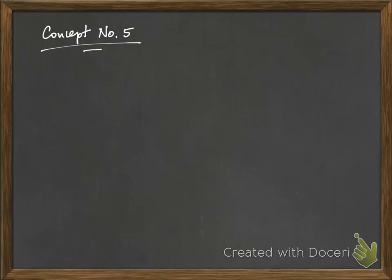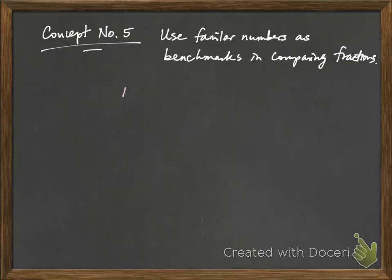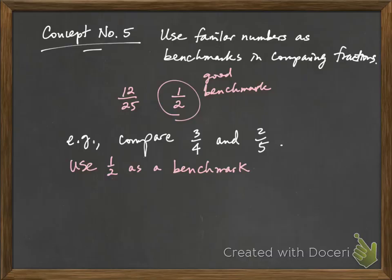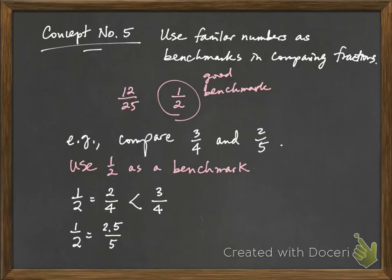The last concept we'll talk about is using familiar numbers as benchmarks in comparing fractions. You might have a hard time knowing where twelve over twenty-five is on a number line, but it should be easy to find one-half. So the number you're familiar with is what we call the benchmark. For example, to compare three-fourths and two-fifths, use one-half as a benchmark. One-half equals two-fourths, and three-fourths has more parts than two-fourths, so three-quarters is greater than one-half. Meanwhile, one-half equals 2.5 over five, which is greater than two over five. So three-quarters is greater than one-half, and two-fifths is less than one-half — therefore three-quarters is greater than two-fifths.